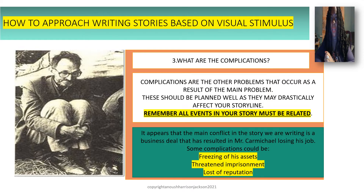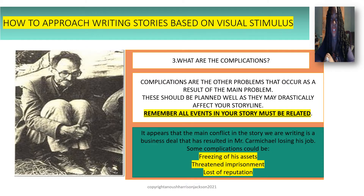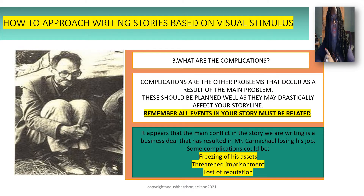If we analyze the story we have so far, what are some complications we could think of with regards to Mr. Carmichael? One complication could be the freezing of his assets. He has lost his job — which is the main conflict — due to a business deal that went sour. Another complication could be a threat of imprisonment, perhaps due to fraudulent transactions. Another complication could be the loss of reputation, given that he is an executive brand manager.